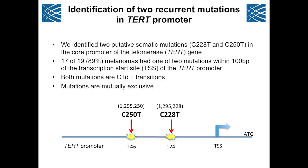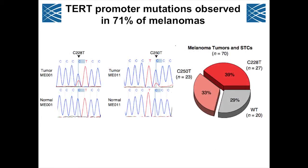These two putative somatic mutations we call C228T and C250T — for the genomic coordinates — are changes from cytidine to thymidine. Both mutations were mutually exclusive and occurred about 200 base pairs upstream from the translation start site, at positions minus 124 and minus 146. It took a long time to convince ourselves these mutations were real. We performed traditional Sanger sequencing to confirm that both were present in the tumor but not in the normal in matched melanoma samples.